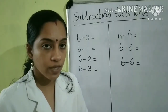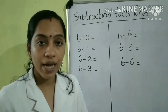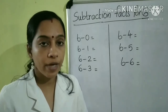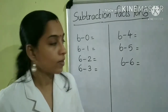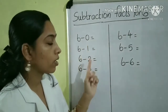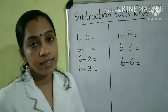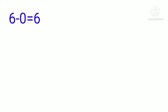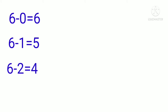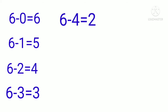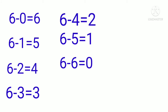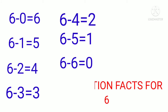Next, we will learn the subtraction facts for 6. For finding the subtraction facts for 6, we have to subtract 0, 1, 2, 3, 4, 5 and 6 from 6. So, let us start: 6 minus 0 is equal to 6; 6 minus 1 is equal to 5; 6 minus 2 is equal to 4; 6 minus 3 is equal to 3; 6 minus 4 is equal to 2; 6 minus 5 is equal to 1; 6 minus 6 is equal to 0. These are the subtraction facts for 6.